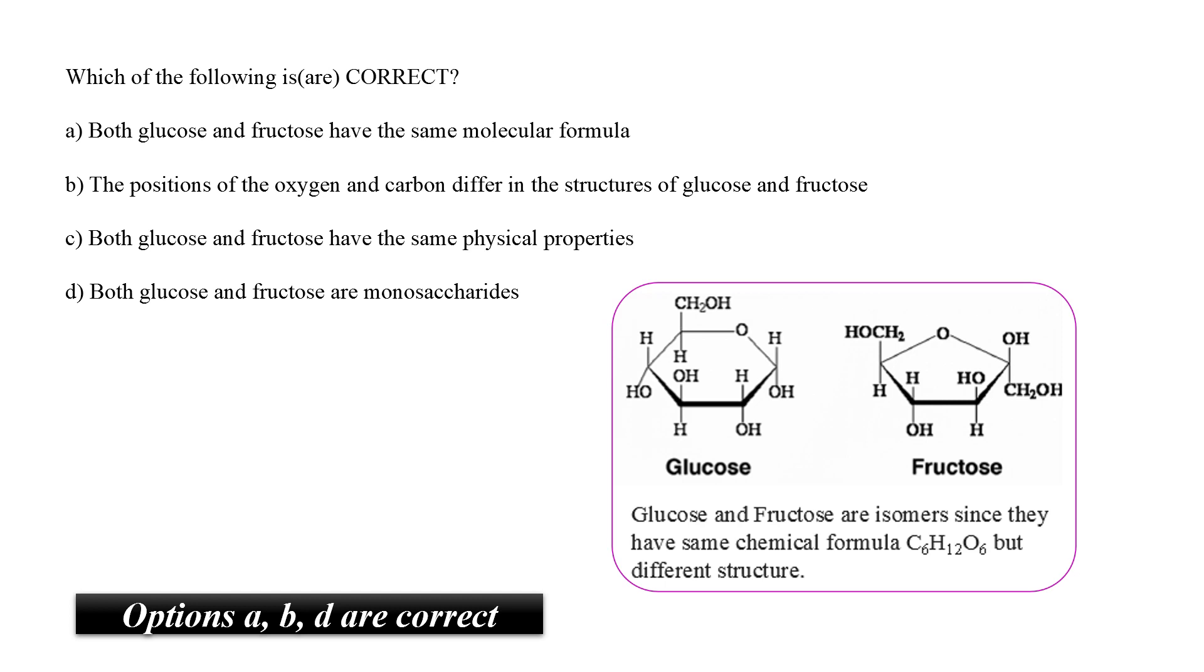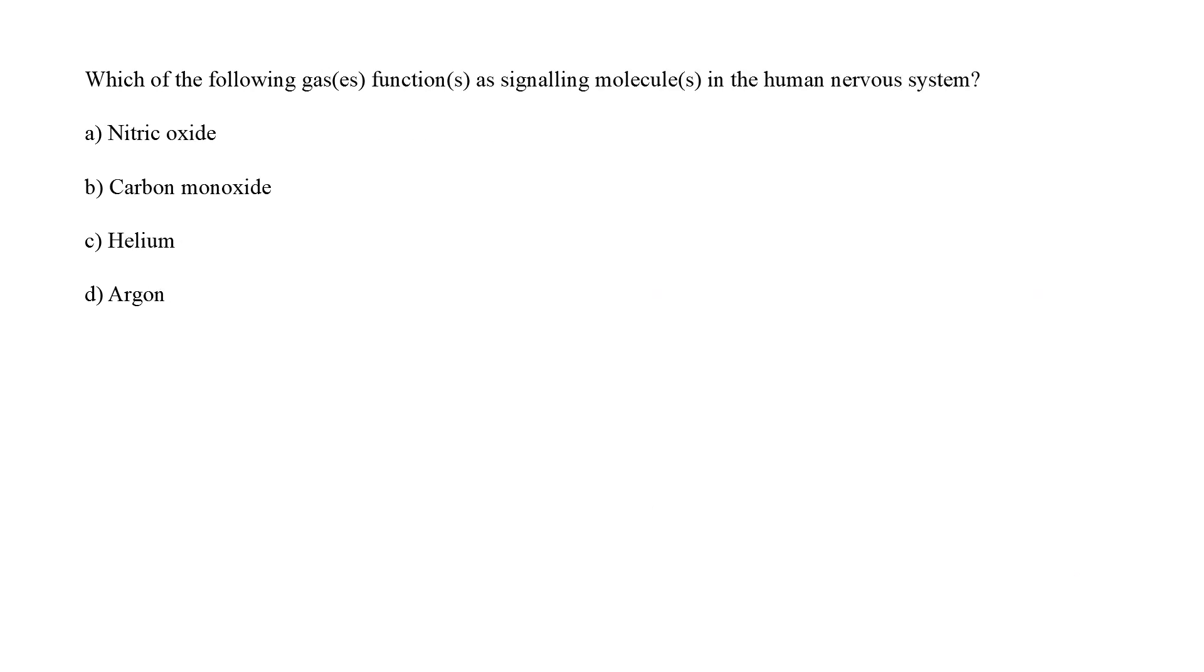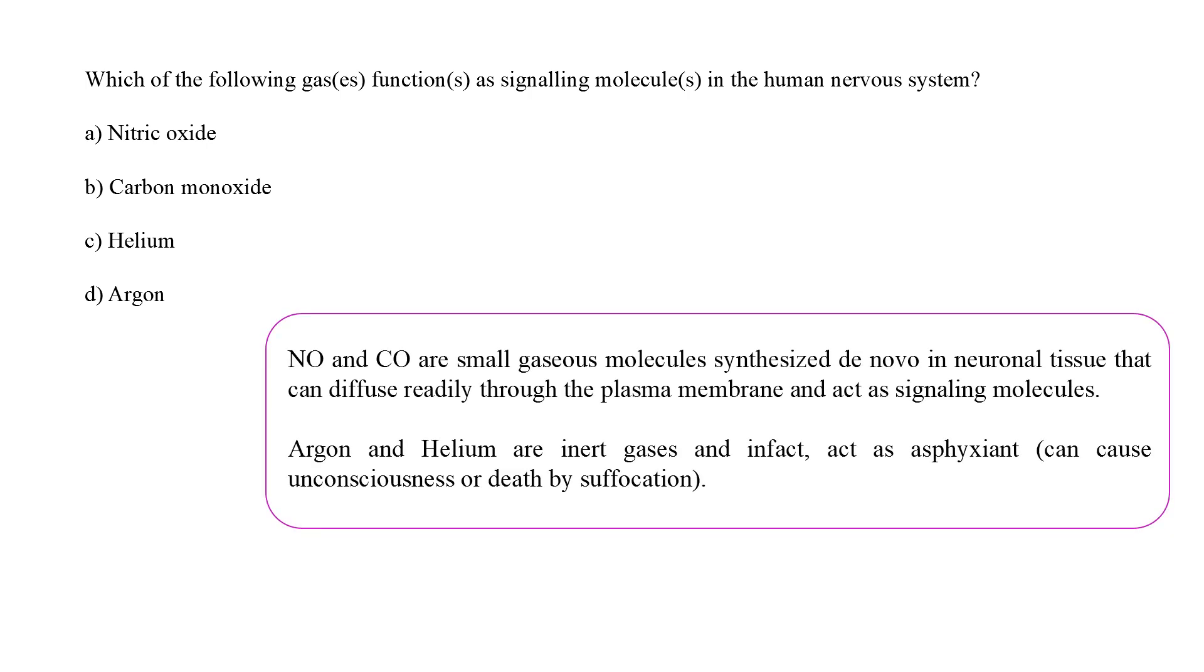Moving on. Which of the following gases function as signaling molecules in the human nervous system? Nitric oxide, carbon monoxide, helium, argon. Well, nitric oxide and carbon monoxide are small gaseous molecules that are synthesized in the neuronal tissue. So, they can readily diffuse through the plasma membrane and can very well act as signaling molecule. But, argon and helium are inert gases and they rather act as asphyxiants. They can cause suffocation. In this question, option A and B are therefore the correct choices.